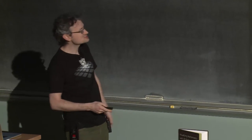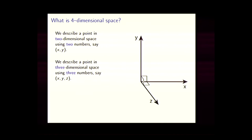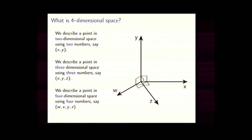Let's make sure we're all on the same page. In two-dimensional space, you can specify the location of a point with two numbers — X and Y. I need two numbers to talk about a point in two dimensions. For three dimensions, I need a third direction — a z-axis — and I can talk about points with three numbers, with another axis at right angles to the other two. For four-dimensional space, I just add an extra direction at right angles to the other three, and I talk about four different numbers to describe a point.